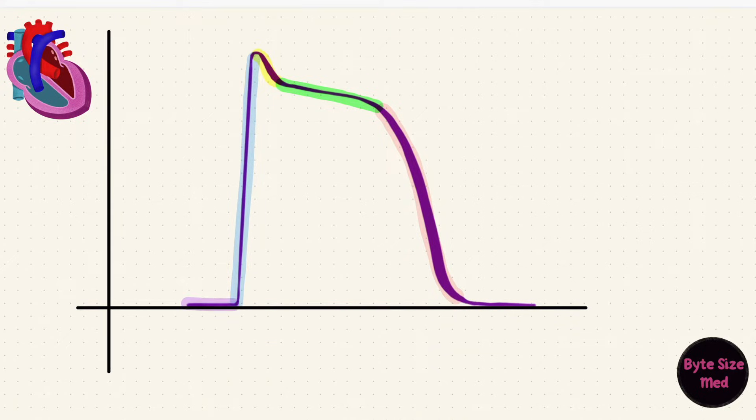In cardiac muscle, the resting membrane potential is a little more negative than a neuron, at around negative 90 millivolts. The upstroke means the potential is becoming less negative and more positive. That's depolarization.